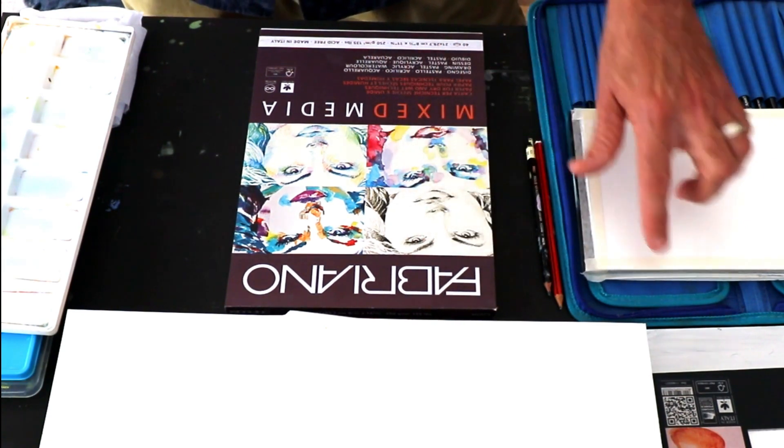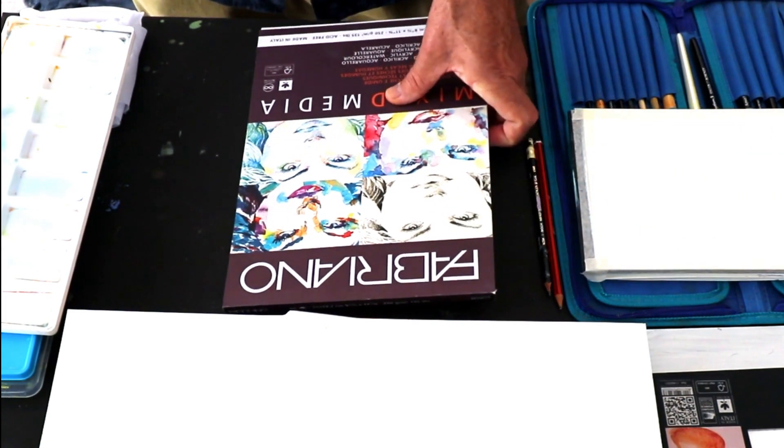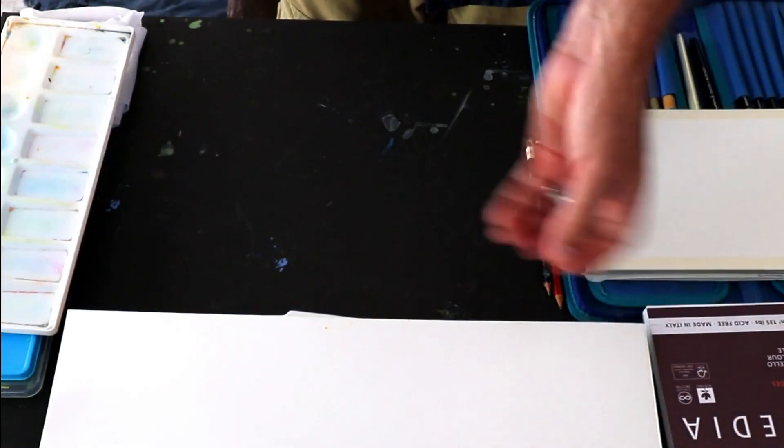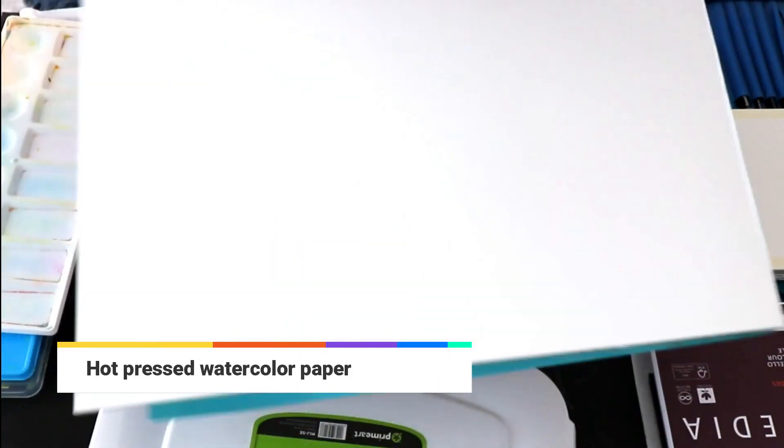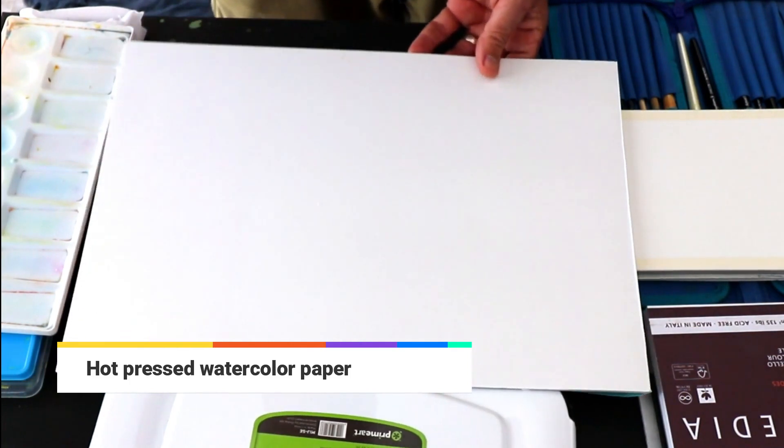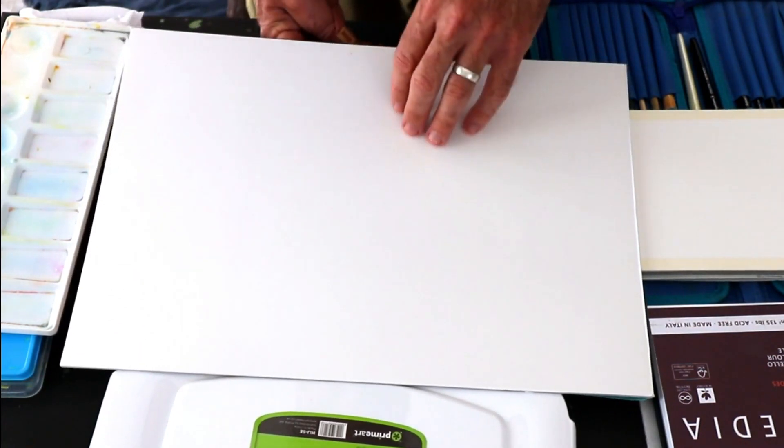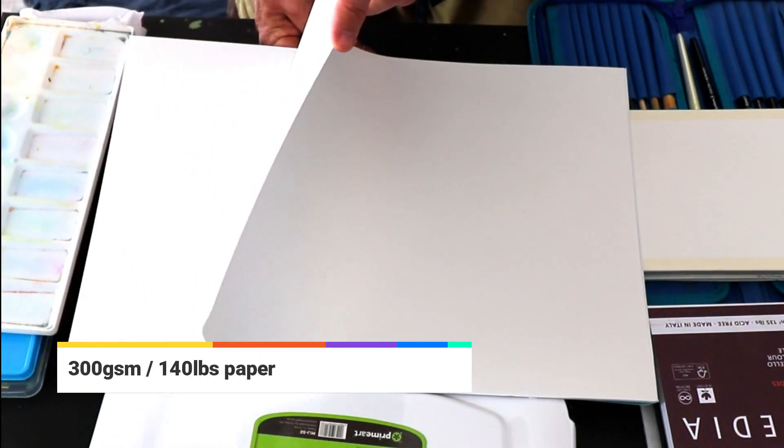Perhaps with masking tape or something like that to make sure you don't have problems with buckling paper. Now this is some hot pressed watercolour paper, also 300 pounds. So it's a good strong card.